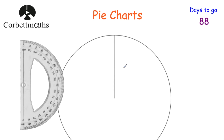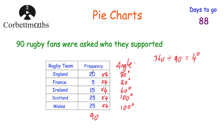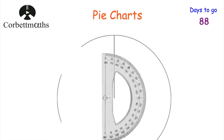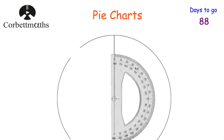Now we just need to draw the pie chart. Here we've got our circle with a line. Typically on a GCSE question the circle is drawn for you. Let's start with England — that's 80 degrees. We get our protractor, put the cross of the protractor on the center of the pie chart, and line up the zero line with the line drawn on the paper.